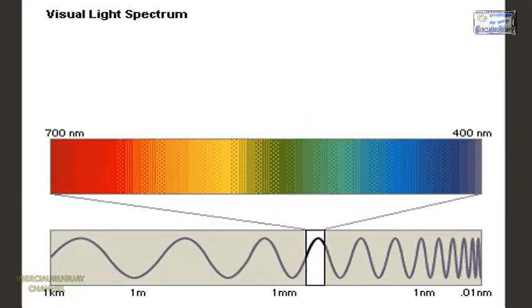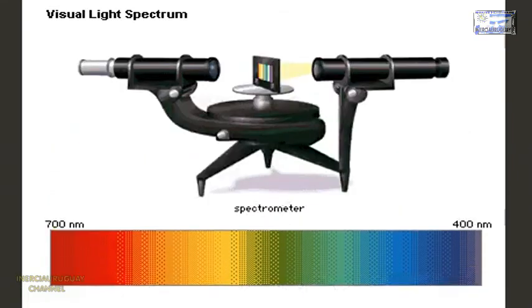Each color of visible light corresponds to a particular frequency in the spectrum. One way scientists measure this frequency is through the use of a spectrometer.